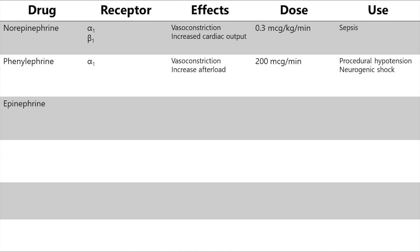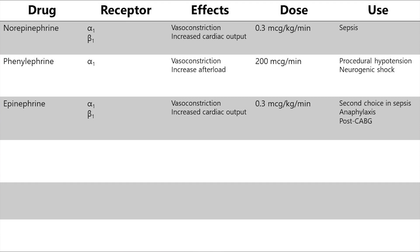Epinephrine is one of those medications with a dual effect depending on concentration. At low doses it has a very strong beta-1 effect to increase cardiac output, but at higher doses the alpha-1 vasoconstrictor effects become much more predominant. The dose range is similar to norepinephrine at up to 0.3 micrograms per kilogram per minute. It's frequently used as a second-line agent in septic shock, and also has primary use in anaphylaxis and after coronary bypass surgery.